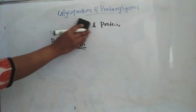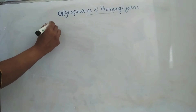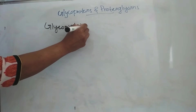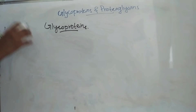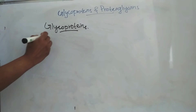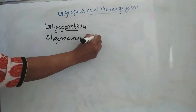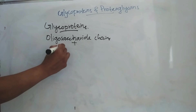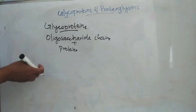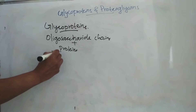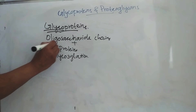First we will see glycoproteins. Glycoproteins are proteins which contain oligosaccharide chains — that is glycans — commonly linked to proteins. So the glycan part here refers to these oligosaccharide chains commonly linked to proteins.